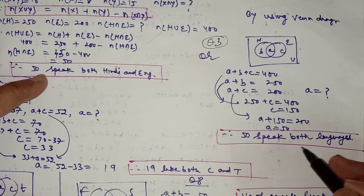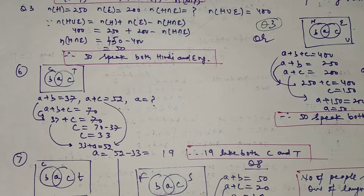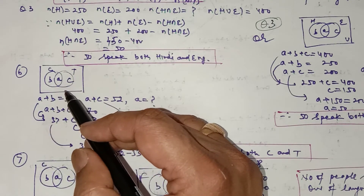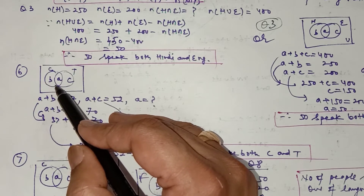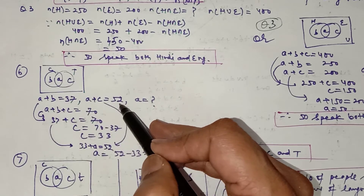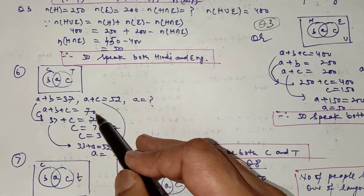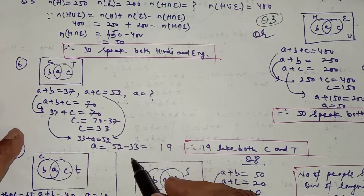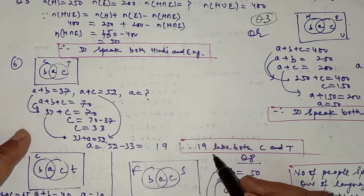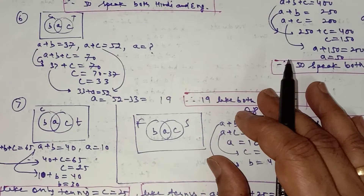Try to do these types of questions using the Venn diagram because it becomes somewhat easier than the cardinal number formula. In question number 6, in a group of 70 people, 37 like coffee (a+b = 37) and 52 like tea (a+c = 52), with a+b+c = 70. You have to find how many people like both tea and coffee — the value of a. Simplify these three equations and you get a = 19. So 19 persons like both tea and coffee.